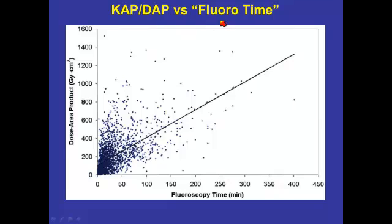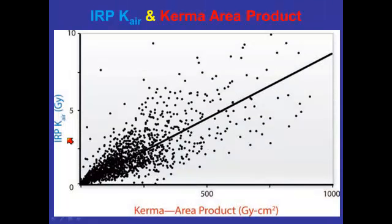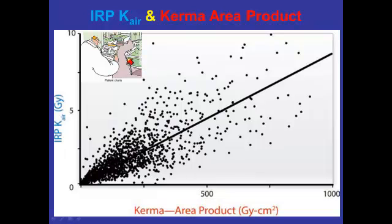Kerma area product versus fluoroscopy time is really a limited measure for taking care of your patients. We have important numbers — IRP Kerma, which should go into your patient's chart and can be used to estimate skin dose and skin risk, and the Kerma area product, which should also go into your chart and can be used to estimate organ doses, effective doses, and with patient demographic data, any possible cancer radiation risk. These numbers really do need to be documented.